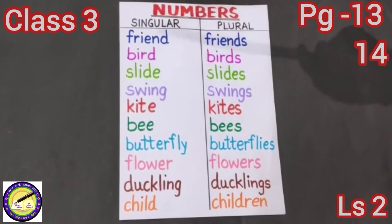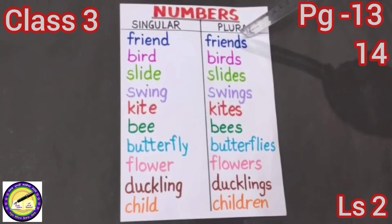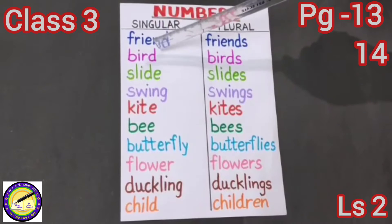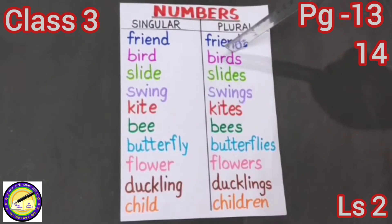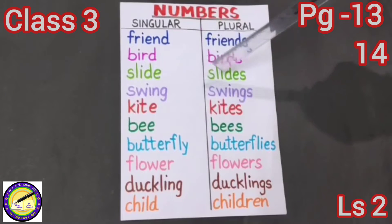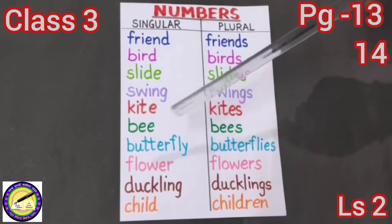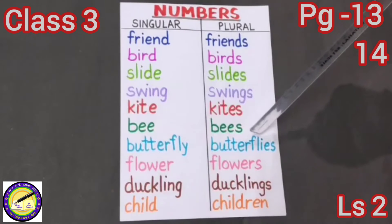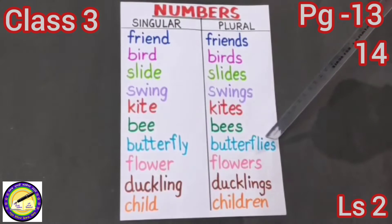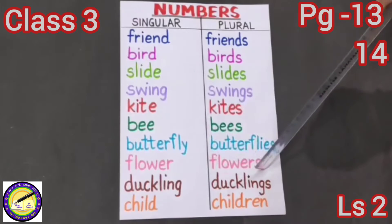Let us read some words. Friend is singular, and the plural is friends. Bird — singular is bird, yani ik panchi; plural is birds — panchiyaan. Slide — slides. Swing — swings. Kite — kites. Bee — bees. Butterfly — butterflies. Look at the spelling: it ends in F-L-I-E-S. Flower — flowers. Duckling — ducklings.